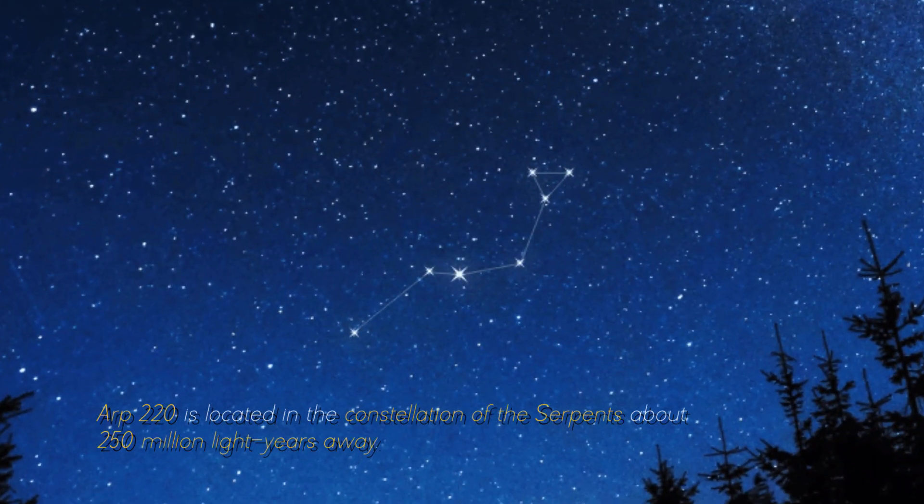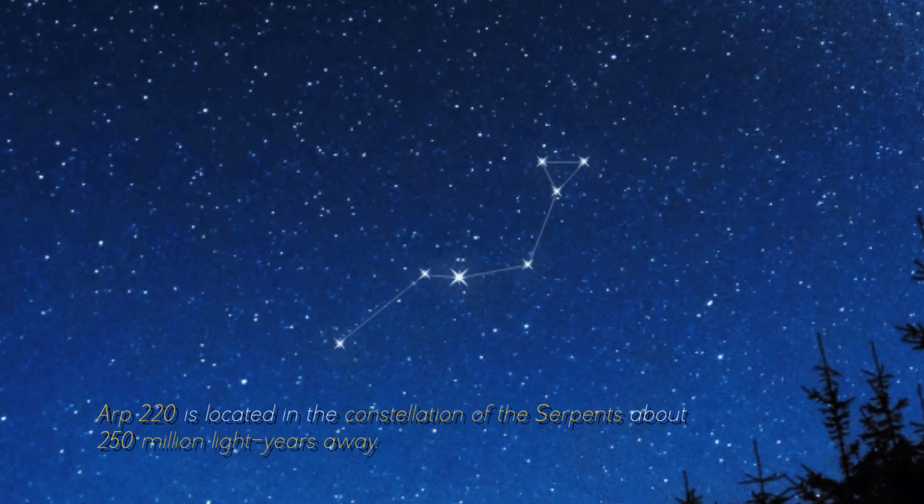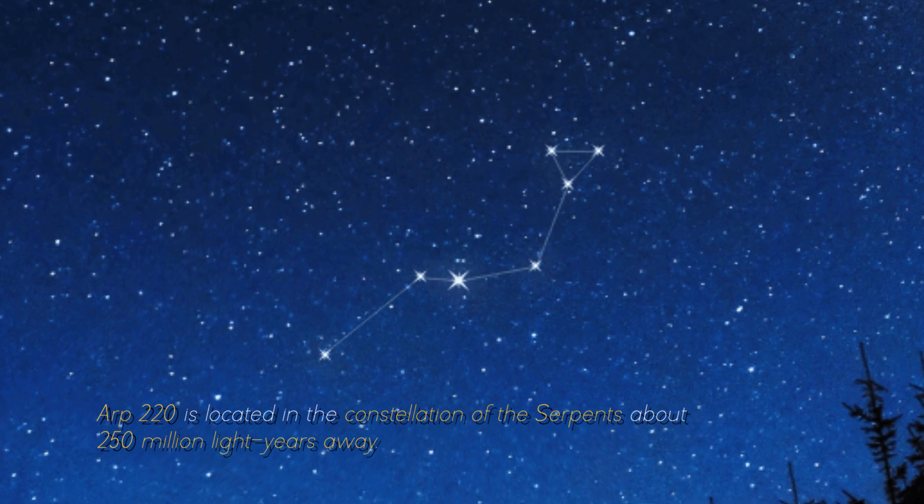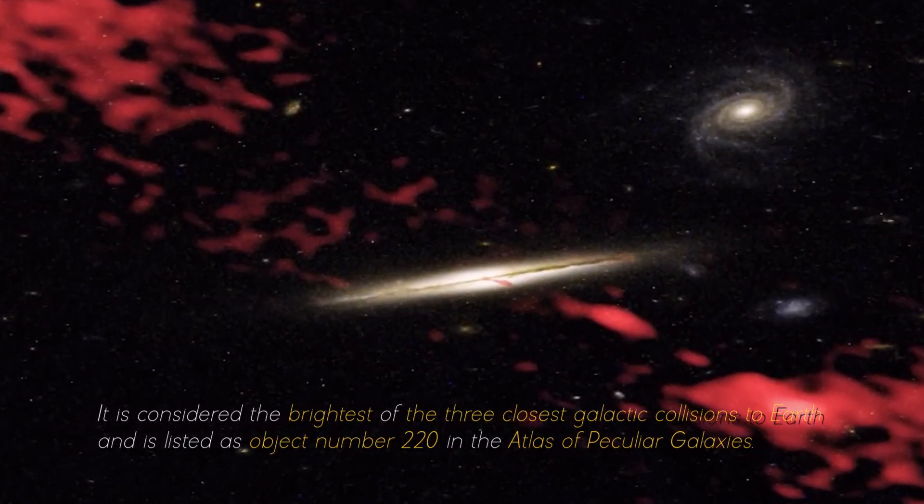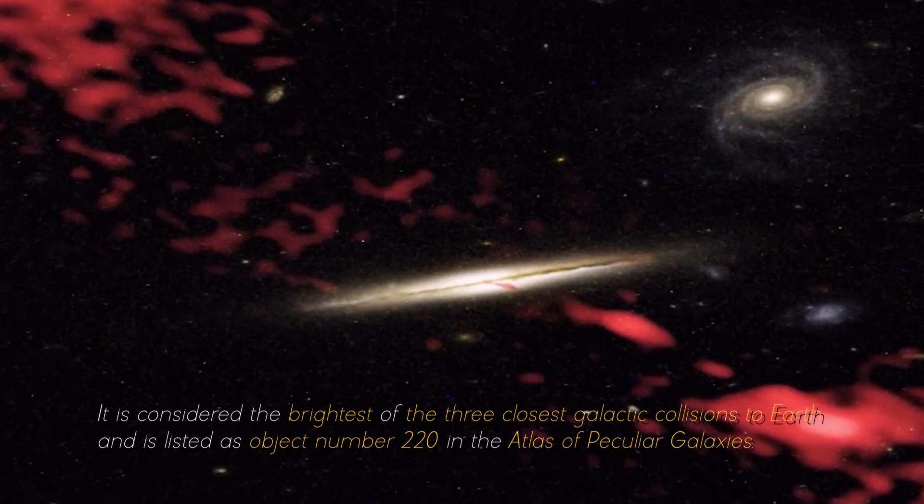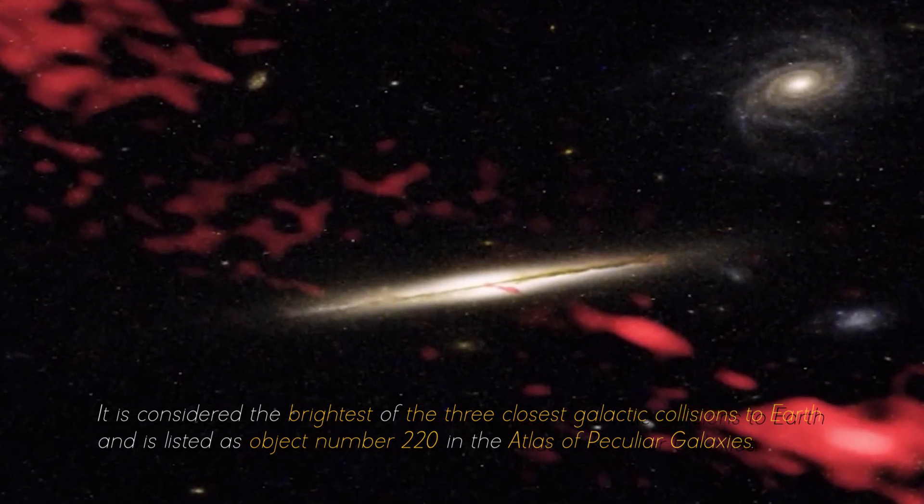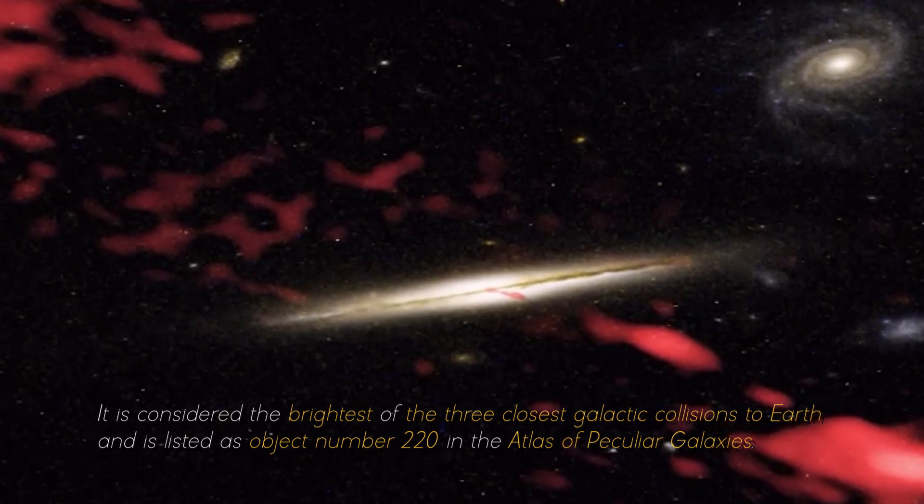ARP 220 is located in the constellation of the Serpents, about 250 million light years away. It is considered the brightest of the three closest galactic collisions to Earth, and is listed as object number 220 in the Atlas of Peculiar Galaxies.